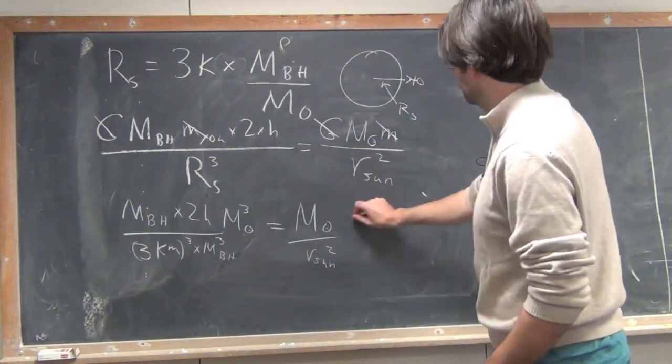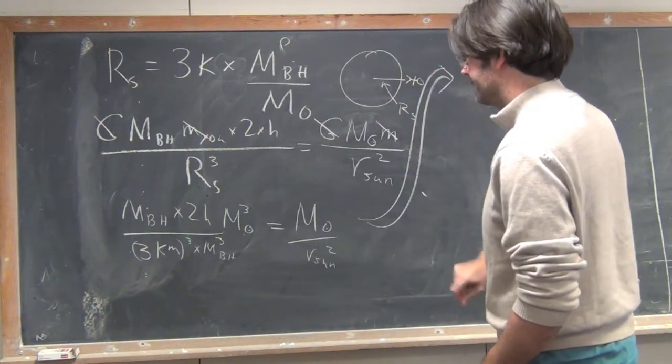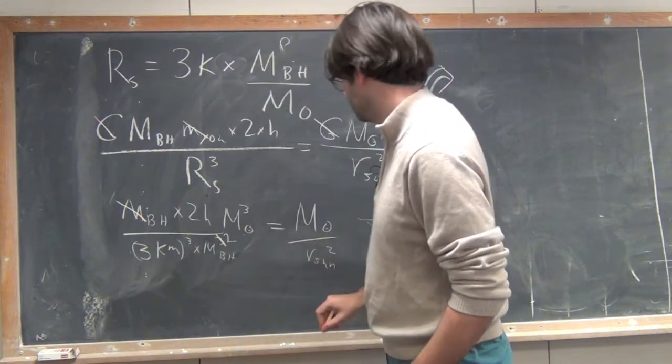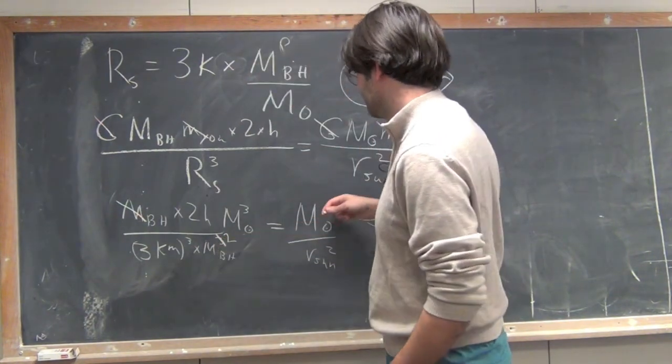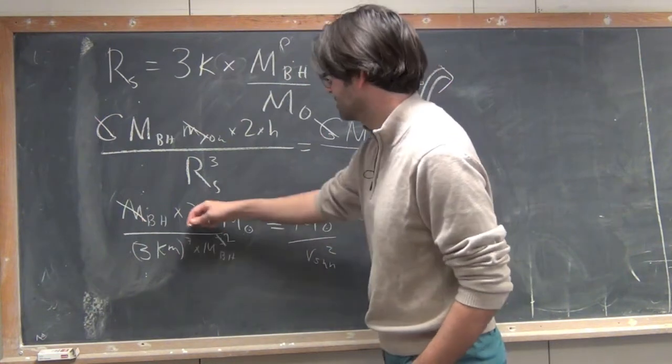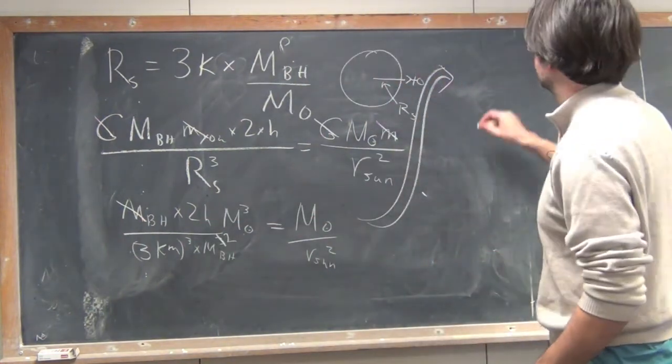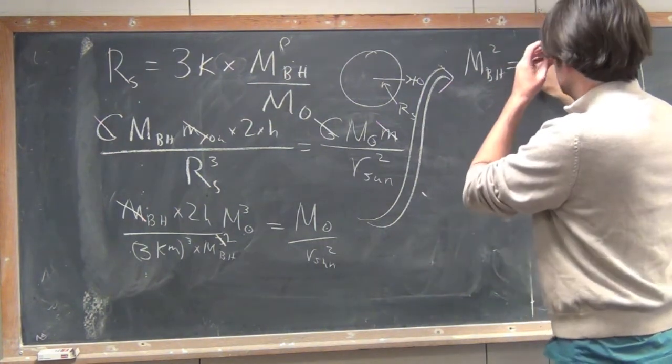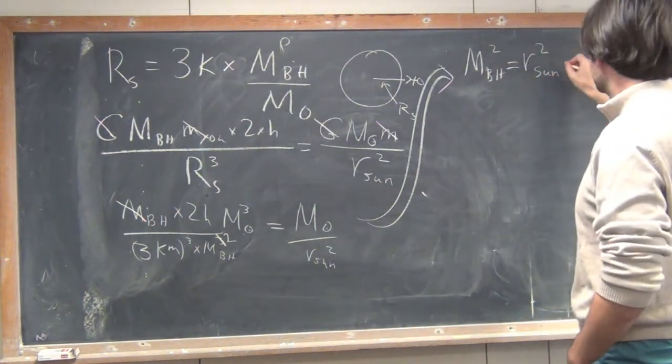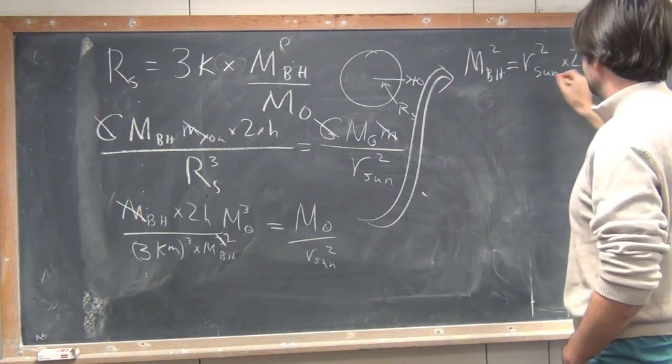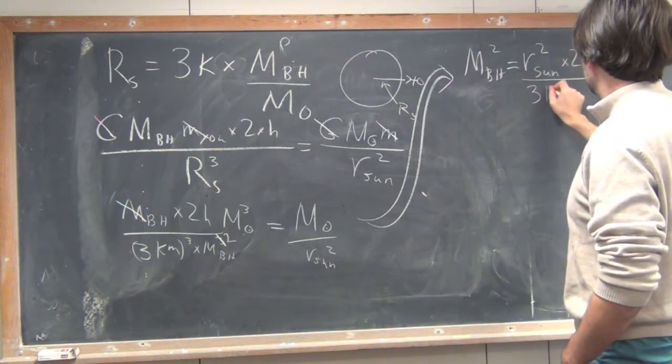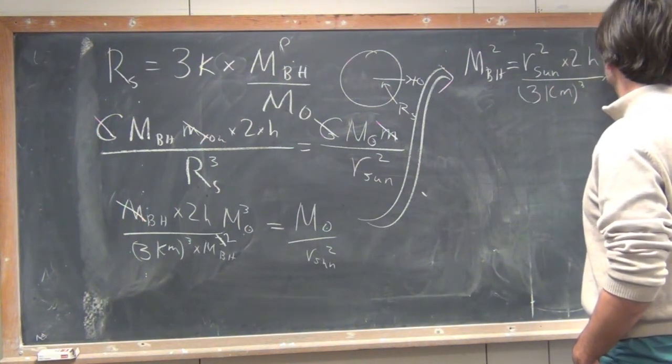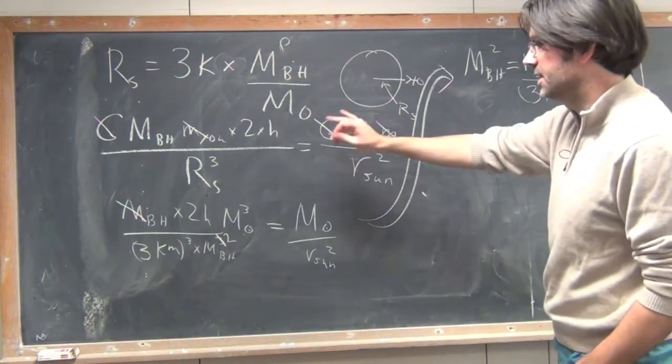Well, I can then rearrange this equation by moving, canceling off that 3 making it a 2. And then I can move this mass of the black hole up there, move this mass of the Sun there, move this radius of the Sun up there, and I'm going to get an equation that looks like this. The mass of the black hole squared is equal to the radius of the Sun squared times 2 times the height divided by 3 kilometers cubed times the mass of the Sun squared.